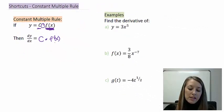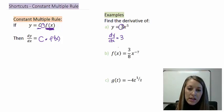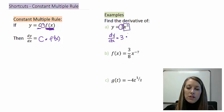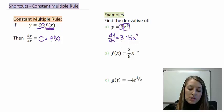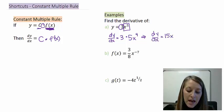In example A, we have y equals 3 times x to the fifth. Our derivative, dy/dx, keeps the constant 3 out front, then we take the derivative of x to the fifth using the power rule — bring the power down in front and subtract one from the original power — giving us times 5x to the fourth. Then we simplify: 3 times 5 gives us 15x to the fourth.